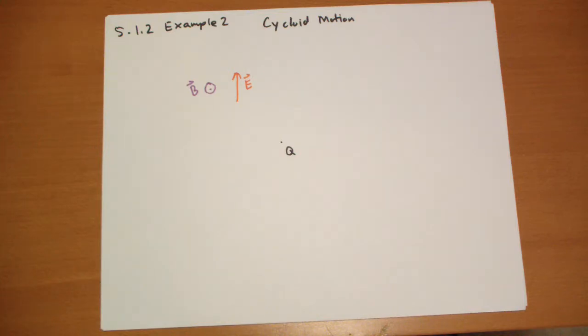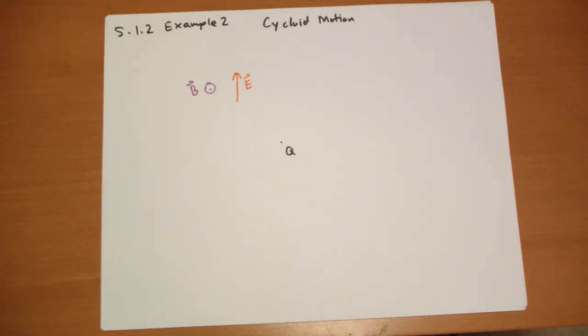So it's going to rotate around until it starts to move against the electric field, and then it will slow down. The question is what path does this follow? They give the answer away in the book, so we're going to do the math on our own.